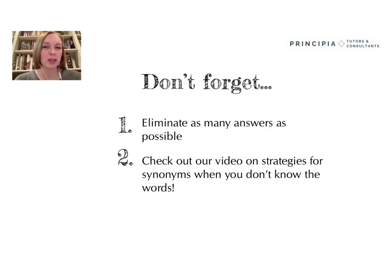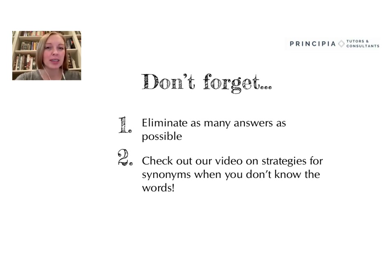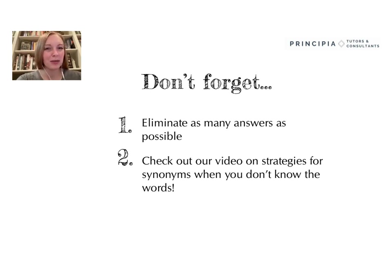I have a few final reminders before we wrap up. First, as you're answering questions where you don't know the words, make it your goal to just eliminate as many answers as possible. If you can use the parts of speech trick, determining the relationships between the answer choices, and determining which answers are similar to or different from each other, you should be able to eliminate one or two options — and then you can feel free to guess between the remaining choices. Second, if you'd like even more practice, check out our strategies for synonyms where you don't know the words; it'll give you some new techniques that might come in handy. You should now have just a few more strategies to help you get a few more of those analogy questions right.